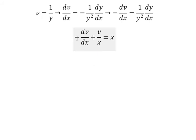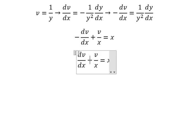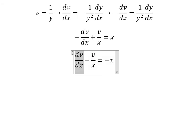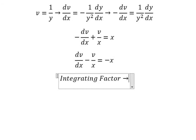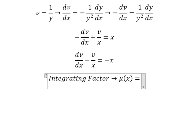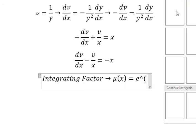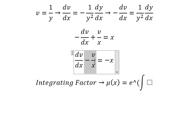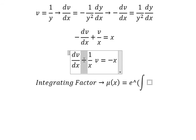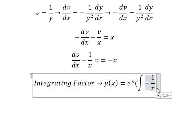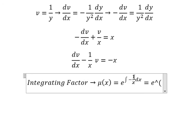Now we multiply both sides by negative 1. We can see that we have the original function v and the first derivative of v, so we can use an integrating factor. I will put mu of x equals e to the power of the integrating factor, and we see this gives e to the negative 1 over x multiplied by v.